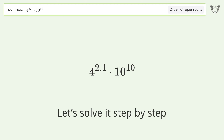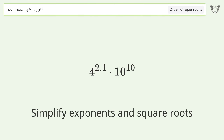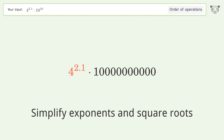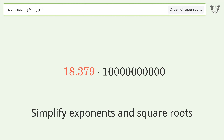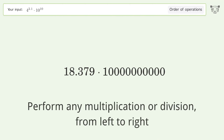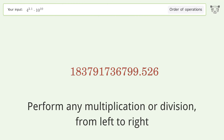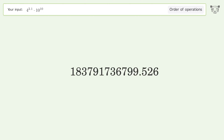Let's solve it step by step. Simplify exponents and square roots: 10 to the power of 10 equals 10,000,000,000. 4 to the power of 2.1 equals 18.379. Perform any multiplication or division from left to right: 18.379 times 100,000. And so the final result is 183,791,736,799.526.